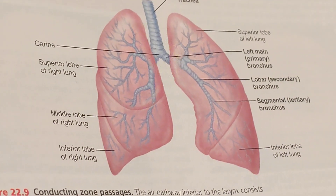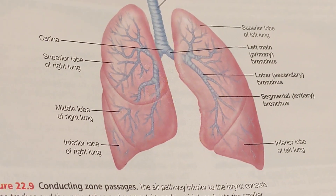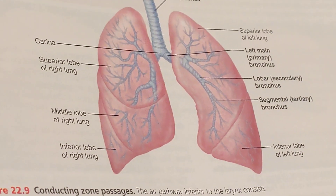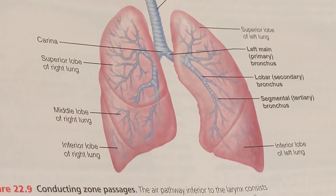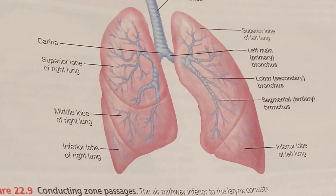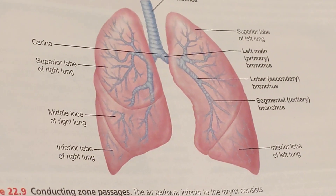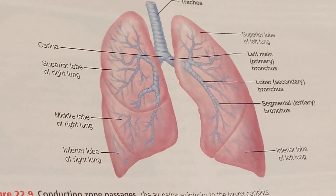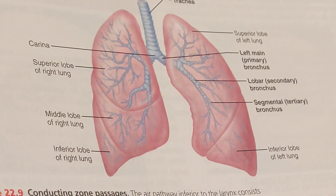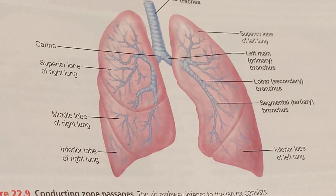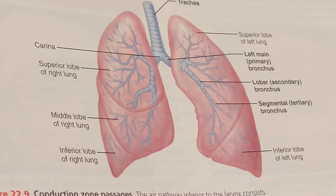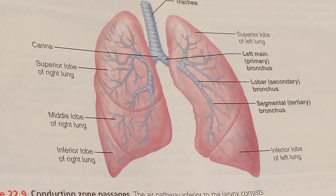As the inspiratory muscles relax and resume their natural length, the ribcage descends and the lungs recoil. Because of this, both the thoracic and intrapulmonary volume decrease. As a result, the alveoli are compressed and the increase in intrapulmonary pressure forces gases out of the lungs and into the atmosphere.